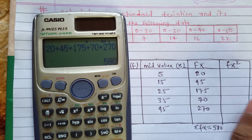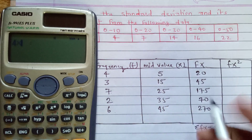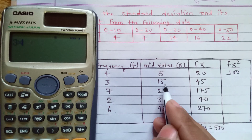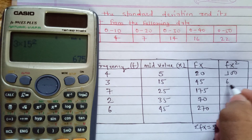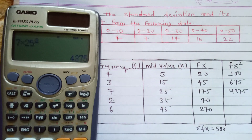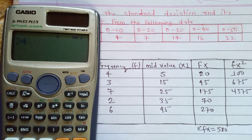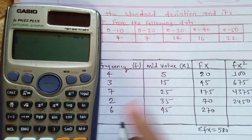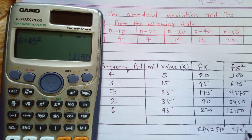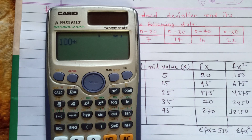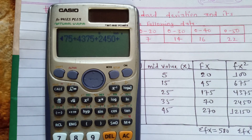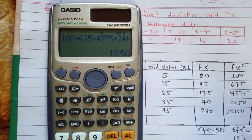Now FX² is calculated: 4×5² = 100, 3×15² = 675, 7×25² = 4375, 2×35² = 2450, 6×45² = 12150. The summation of FX² is 100 + 675 + 4375 + 2450 + 12150, which equals 19750.